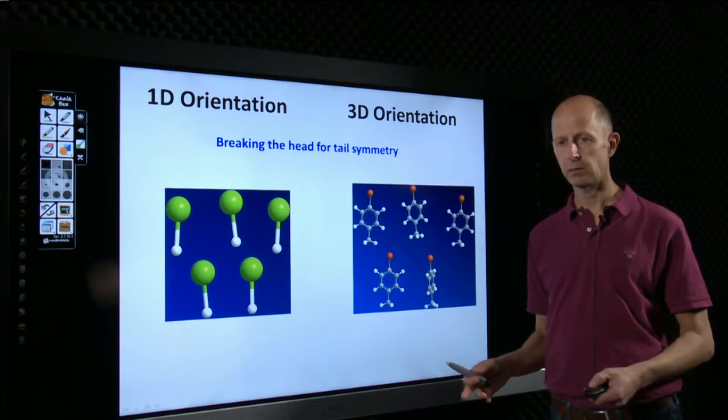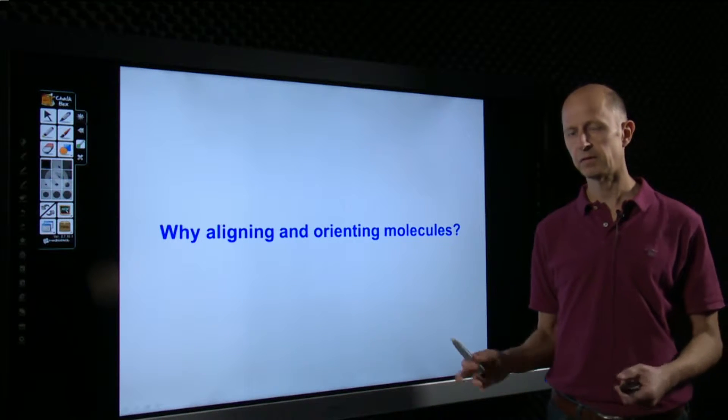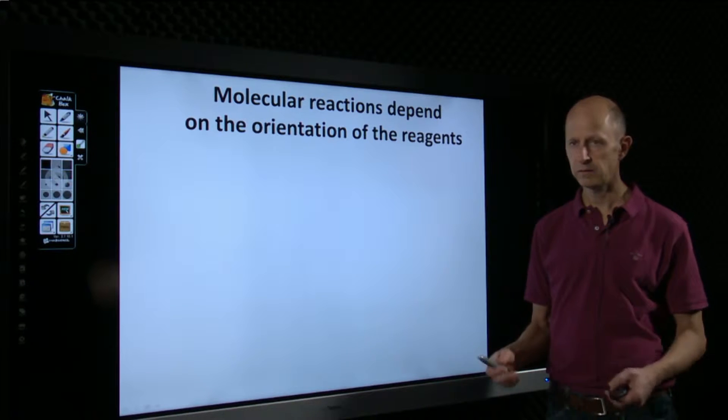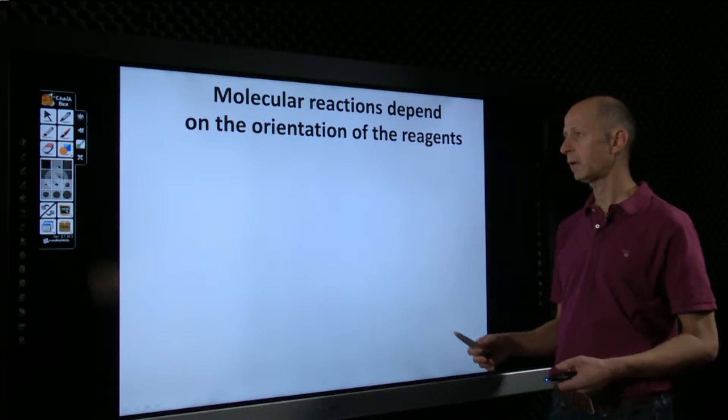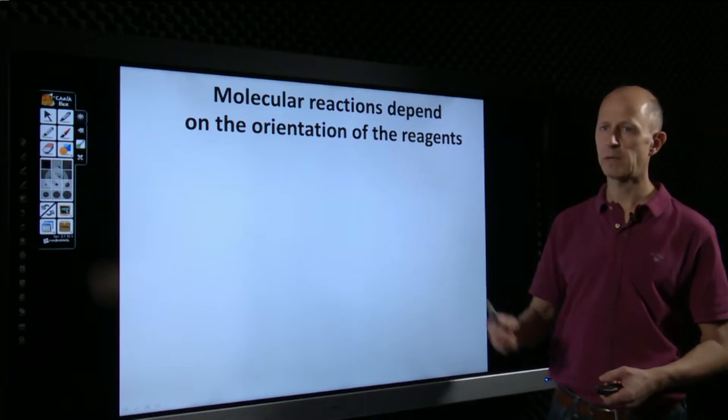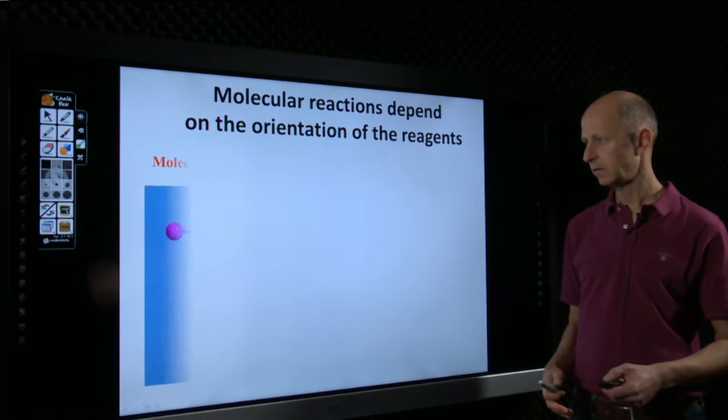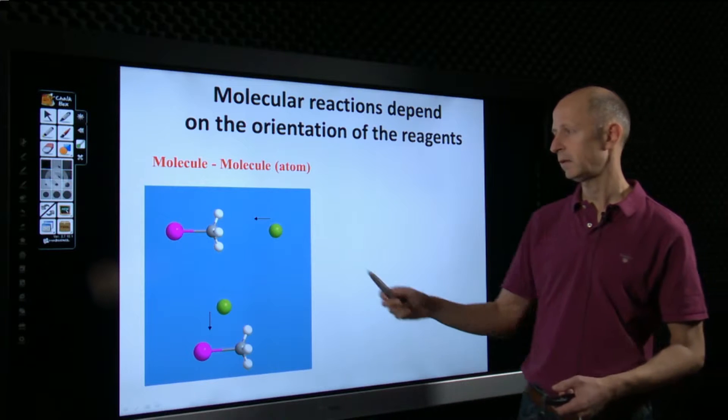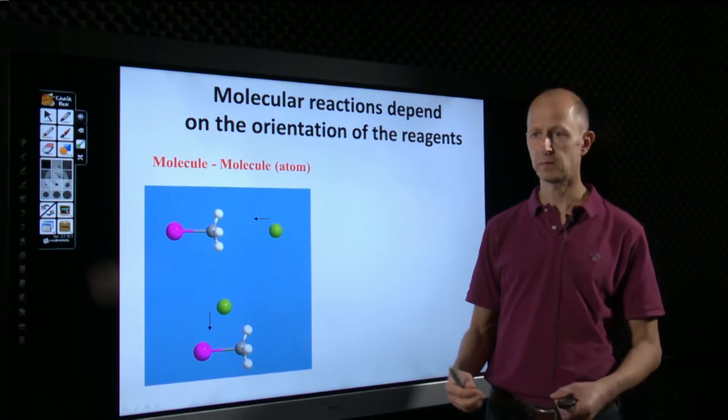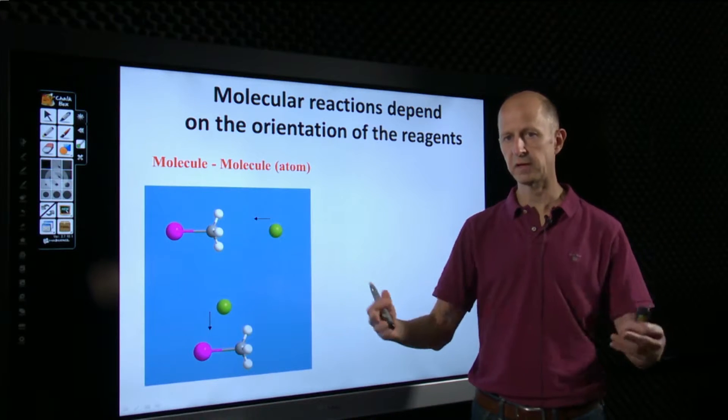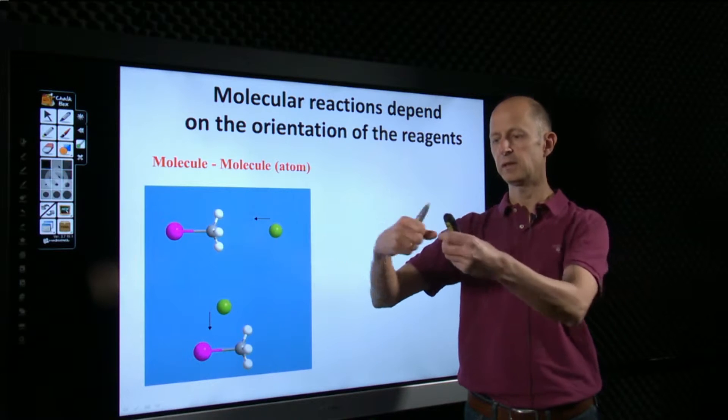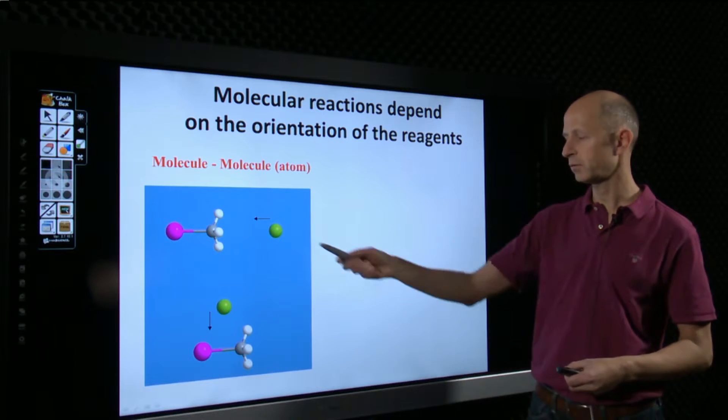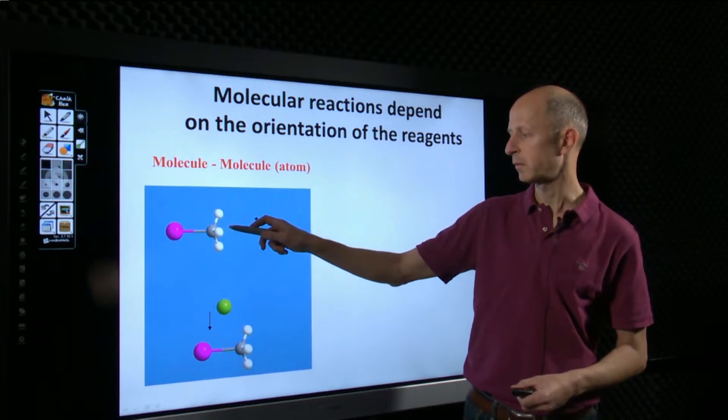Before I tell you about how we align and orient molecules, I'd like to show you just a single slide with the motivation for why we're interested in aligning and orienting molecules. In fact, the prime motivation for aligning molecules is the fact that molecular reactions depend on the orientation of the reagents. This is an old story in chemistry going 50, 60, maybe even 70 years back in time. If you look at reactions between molecules and atoms, then for the simple fact that molecules are really not spherical objects, it's kind of obvious that if you approach two molecules, then their reaction, both the outcome and the rate, will depend on how the molecules turn in space.